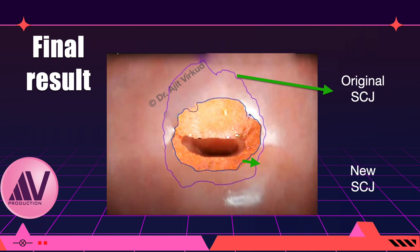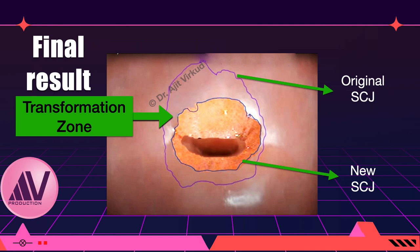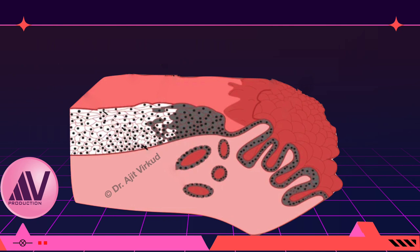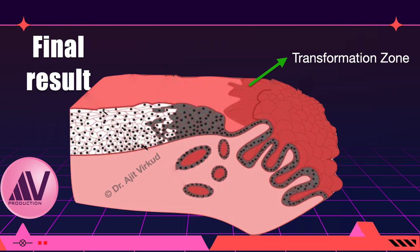The area between the original and new squamo-columnar junction is called the transformation zone. This area is important from the colposcopy point of view because it is the area of enhanced cellular activity, and is therefore prone to develop squamous cell carcinoma. This squamous metaplasia also causes one more thing. This diagram shows a lateral view of the cut section of the cervix at the level of the squamo-columnar junction in adult life, clearly demarcating the transformation zone.